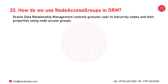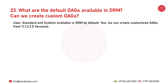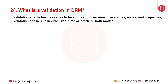The next question is: how do we use node access groups in DRM? Oracle DRM controls granular user access to hierarchy nodes and their properties using node access groups. You can assign users to groups that are granted access to specific nodes in a subset of hierarchies within the DRM version. The default OAGs available in DRM are User, Standard, and System. Yes, we can create customized OAGs from version 11.1.2.3.5 onwards.